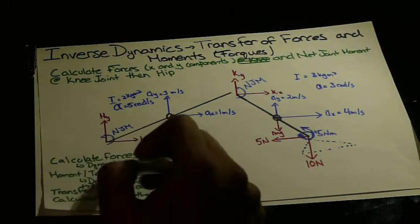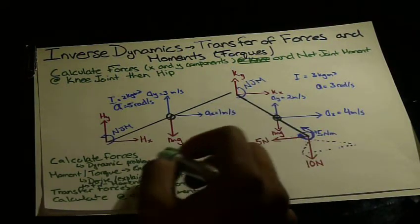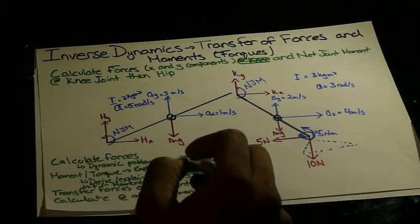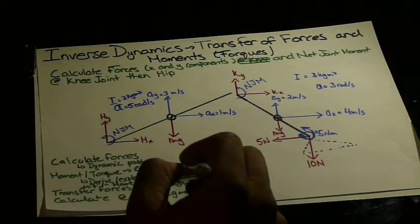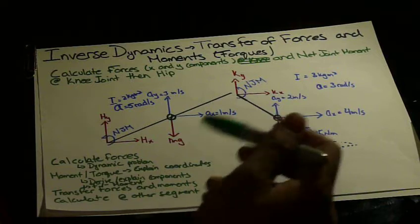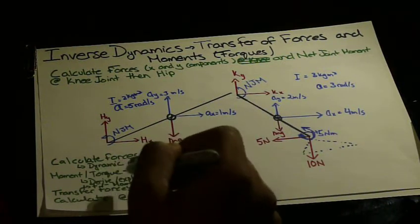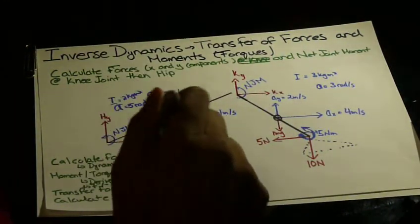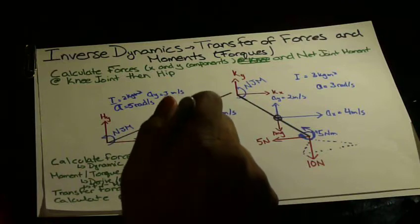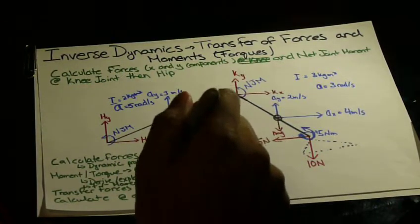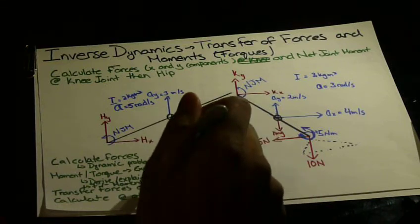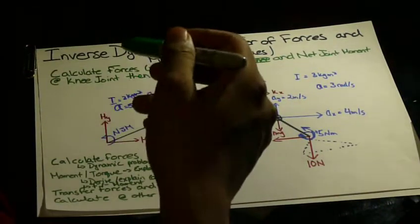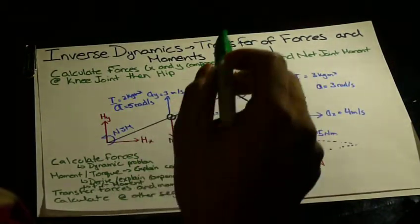Then we will calculate the moment and torques. Instead of having perpendicular distances given to us, we are given coordinates, so I'll show you guys how to use those. I'll derive and explain the components of a torque and show you how to determine whether a torque is positive or negative. After that, I'll conclude the video. Then I'll make a second part of this tutorial to show how the transfer forces and moments work out when we are transferring them to another segment, and then we're going to calculate everything again for that other segment. So right now we'll start off with the shank segment.